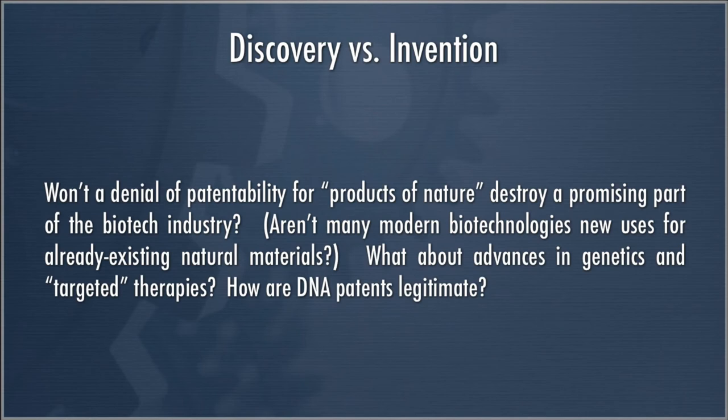Isn't there a lot of the biotech industry that is all about trying to figure out how we can use naturally occurring products — things out in the wild, well-known therapies, or even our own bodies — to create new and important applications? Advances in genetics and targeted therapies, therapies custom-made for my genetic makeup — isn't this going to be a problem given the Chakrabarty ruling that if it's naturally occurring you can't get a patent? DNA patenting has been going on for some time; the PTO issues lots of DNA patents. We're going to talk about a case involving that in a moment.